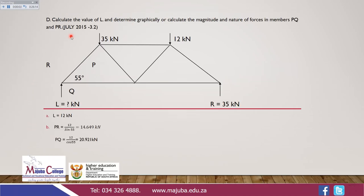Let's take another workout from July 2015, question 3.2. We have to calculate the value of L. We are given an angle of 55°, two forces going down of 35 kN and 12 kN, and one support R equal to 35 kN. To get L: 35 + 12 − 35 = 12 kN, so L equals 12 kilonewton.